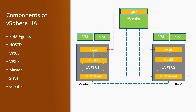The components of vSphere HA include: FDM agents, hostd, vpxa, vpxd, master, slave, and vCenter. Whenever you install or enable vSphere HA on a cluster, it will install the FDM agent on each ESXi host. That FDM agent will communicate with the hostd agent on that particular ESXi host, and vCenter keeps receiving input from the FDM agent to provide vSphere High Availability.